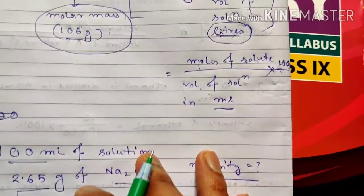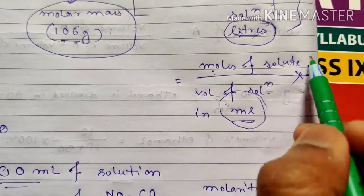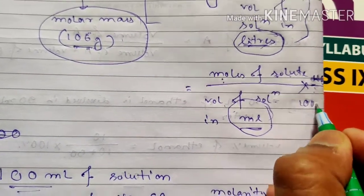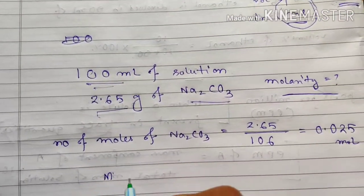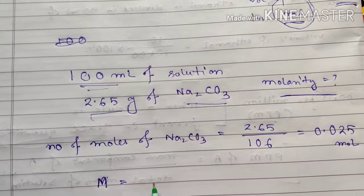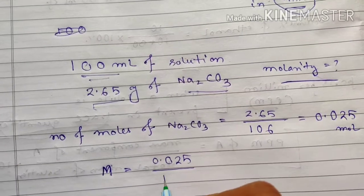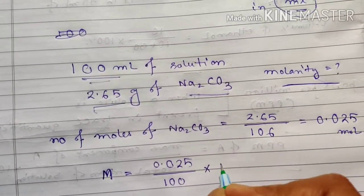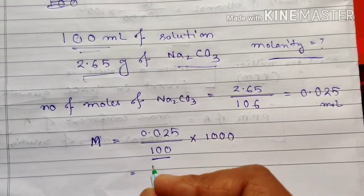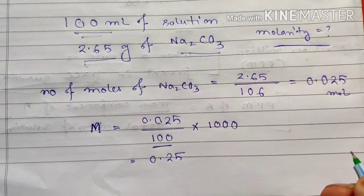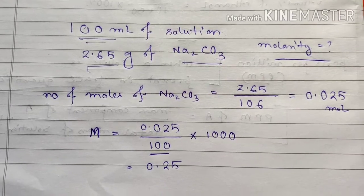The 0.025 mol is dissolved in 100 ml. Since the volume is in ml, we multiply by 1000. So molarity M equals 0.025 divided by 100, multiplied by 1000, giving 0.25 M. That is how we calculate the molarity of a solution. This is a simple example — I hope it helps.